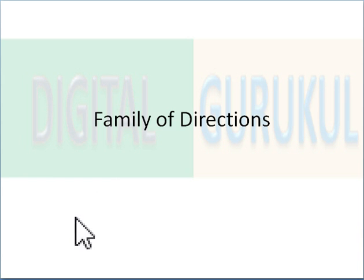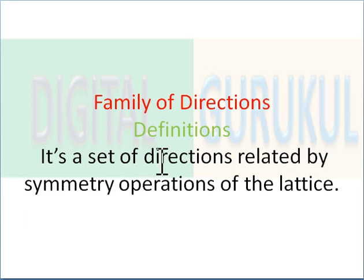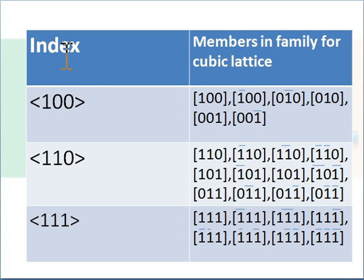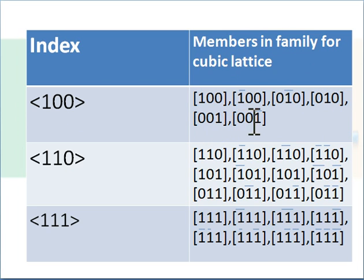The next important topic is the family of directions, which is often asked in examinations and confuses many students. A family of directions is a set of directions related by the symmetry operation of the lattice. For example, under angle bracket ⟨1 0 0⟩, the members for cubic lattices include [1 0 0], [-1 0 0], [0 1 0], [0 -1 0], [0 0 1], [0 0 -1]. Similarly, the family ⟨1 1 0⟩ and ⟨1 1 1⟩ each have their respective members.